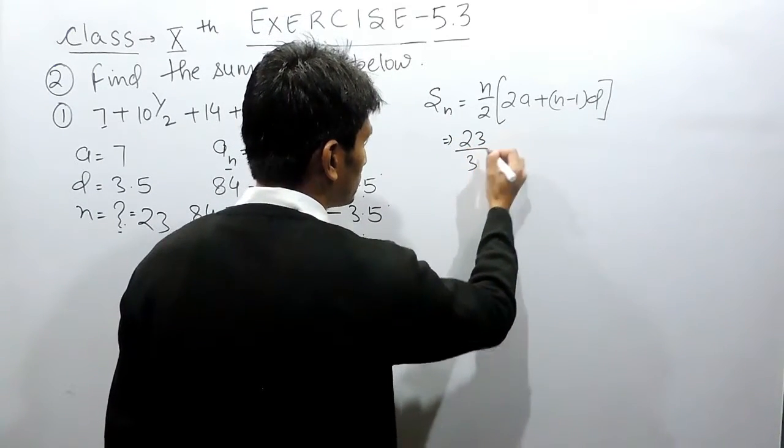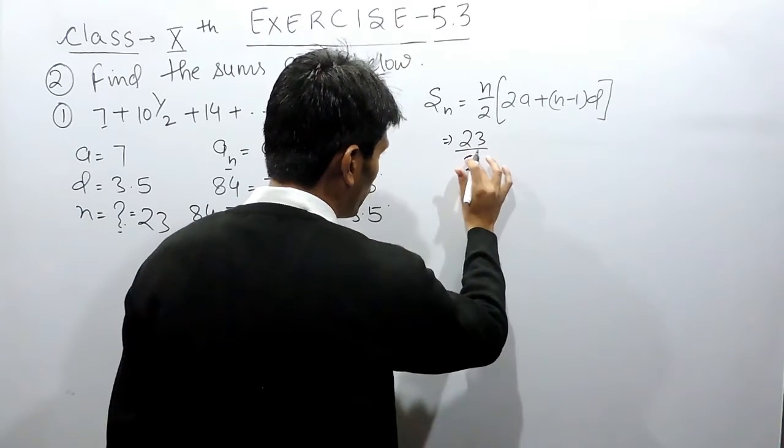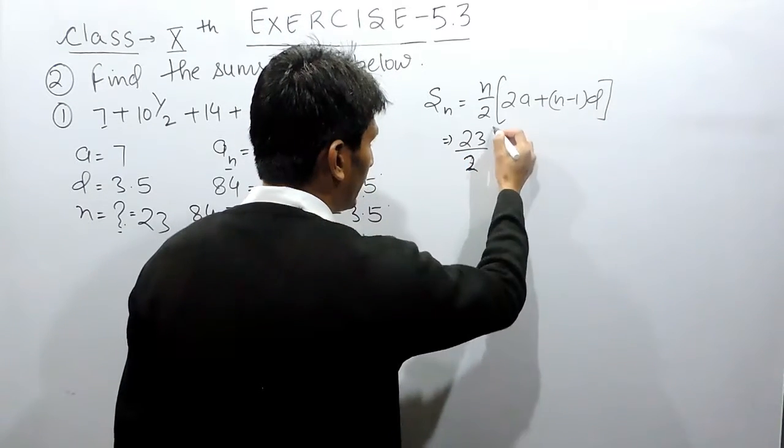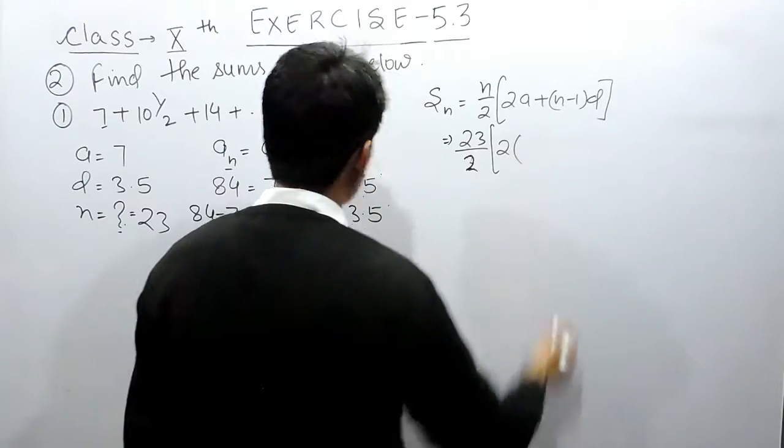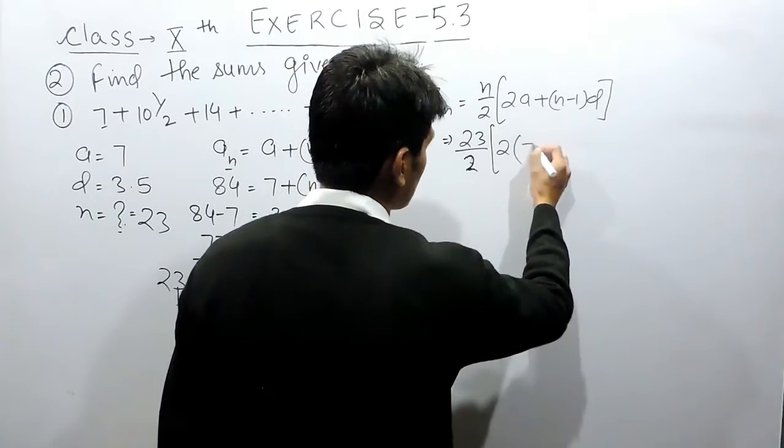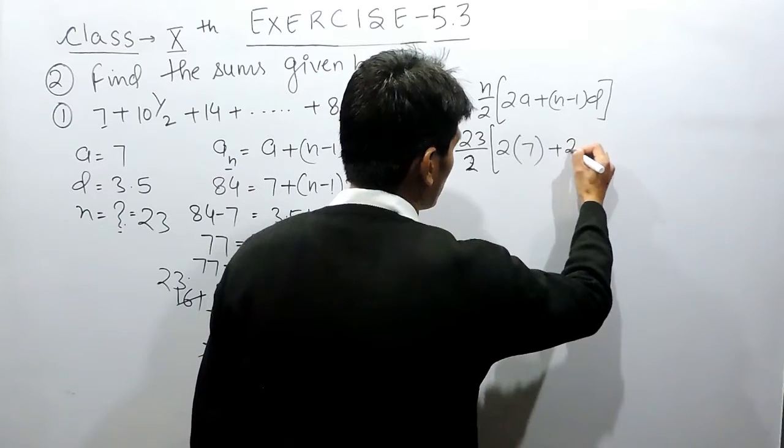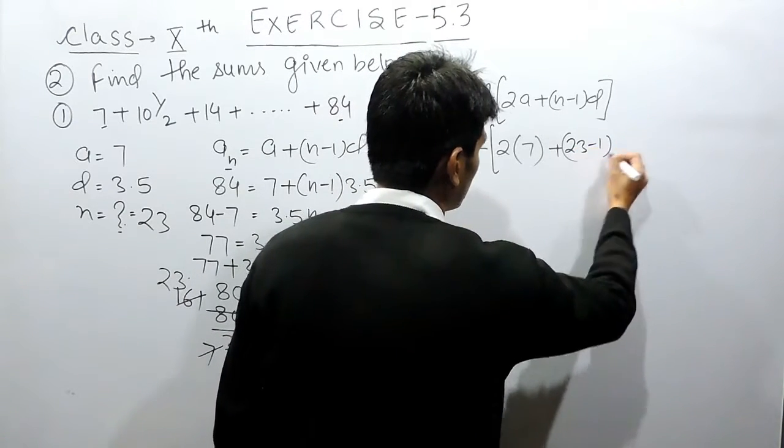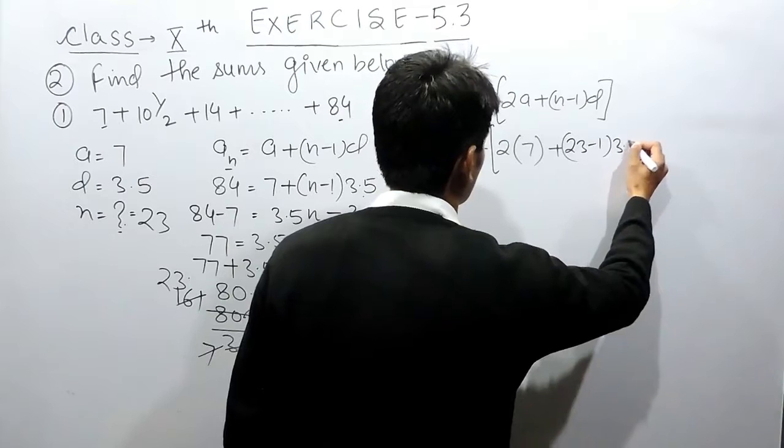So this is 23 divided by 2, and this is 2 multiplied by the first term which is 7, and here are 23 minus 1 into common difference which is 3.5.